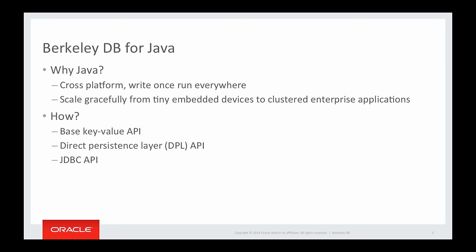So how do you write Java applications using Berkeley DB? Berkeley DB provides three APIs you can use in your Java application: the Base Key-Value API, the Direct Persistent Layer API, or the Standard JDBC API.